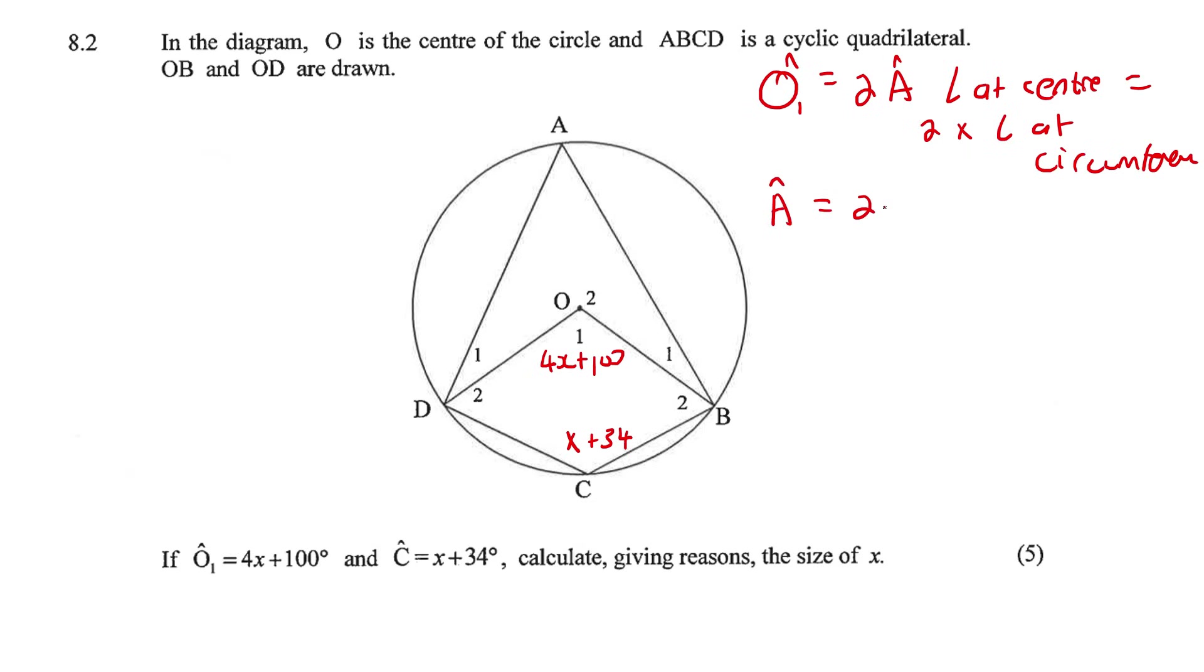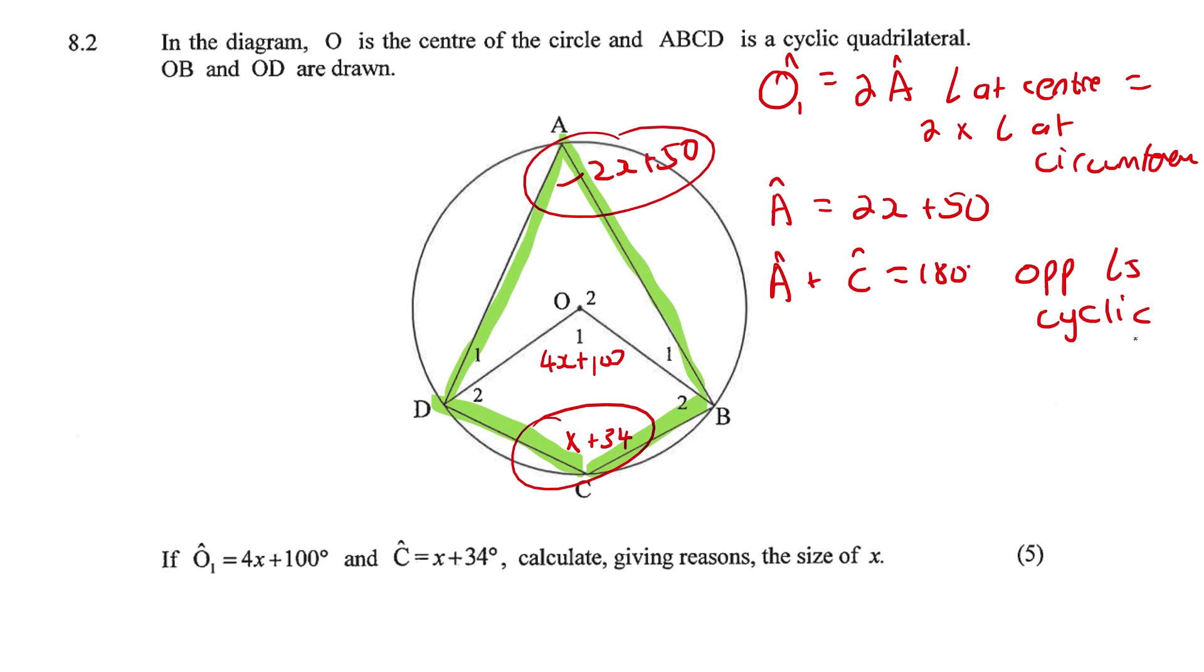Now we know this is a cyclic quad. What do we know about opposite angles of a cyclic quad? They add up to 180 - they're supplementary. Angle A plus angle C must equal 180, opposite angles of cyclic quadrilateral.